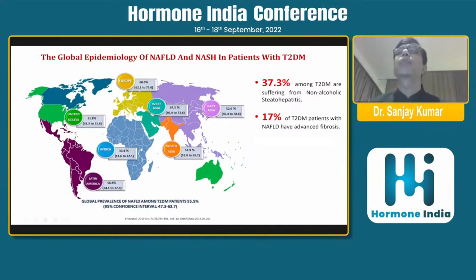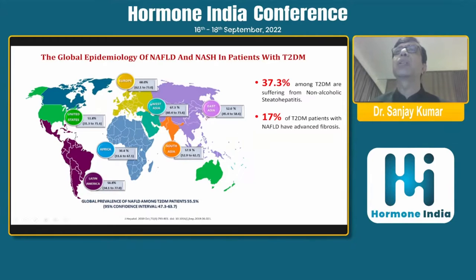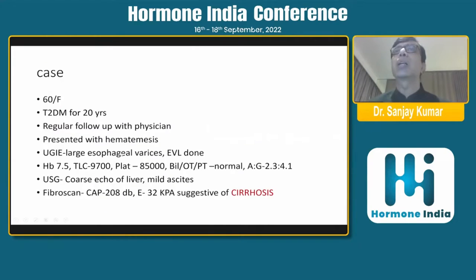If you look at the epidemiology, the global prevalence of non-alcoholic fatty liver disease amongst diabetic patients is nearly 55%. We in India are at about 57.9%. The maximum prevalence is in Europe, which is about 68%, and the lowest is in Africa — for well-known reasons — at about 30%. I'll start with two index cases.